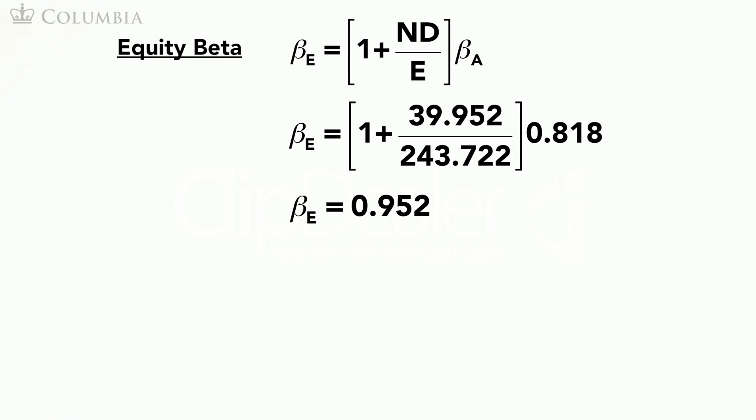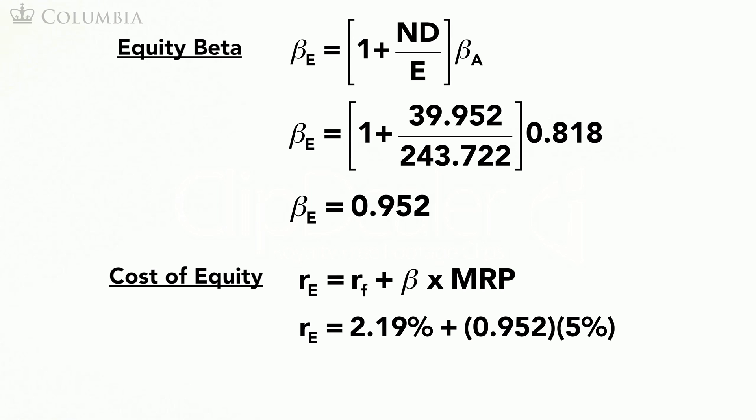The final step is to use the CAPM to compute the cost of equity from the equity beta we just computed. We have already found that the risk-free rate is 2.19% and the market risk premium is 5%. Therefore, the cost of equity is 6.95%.